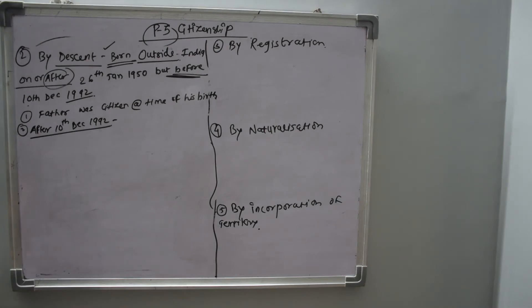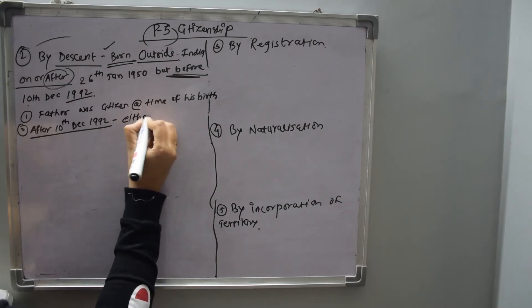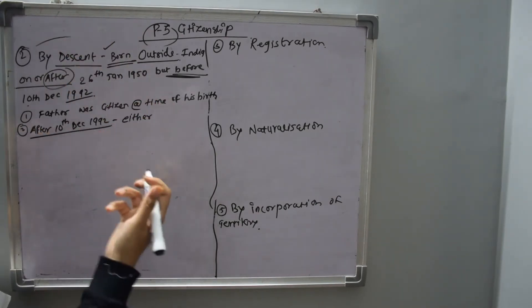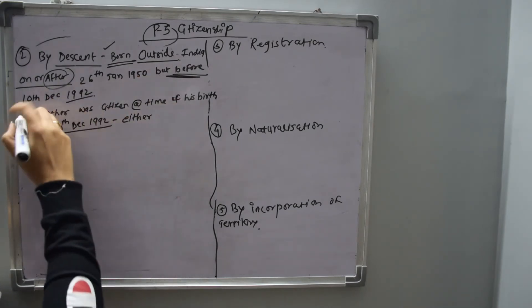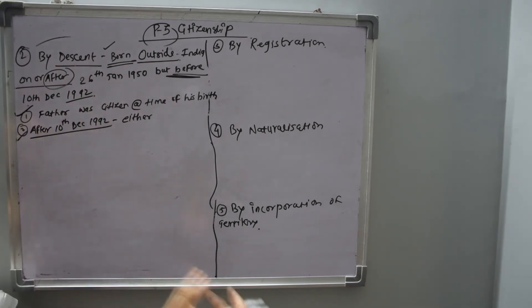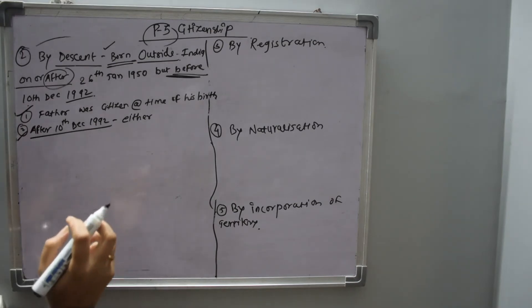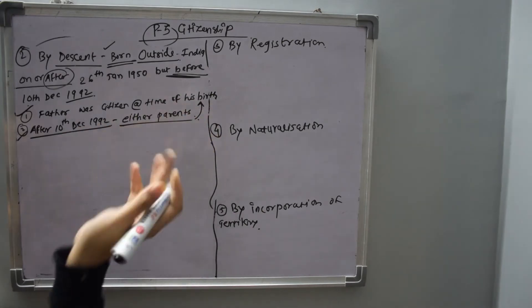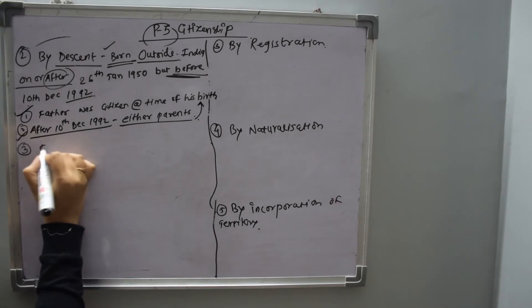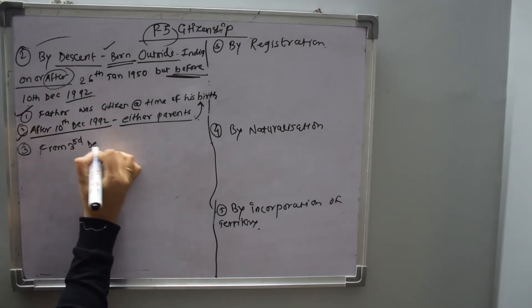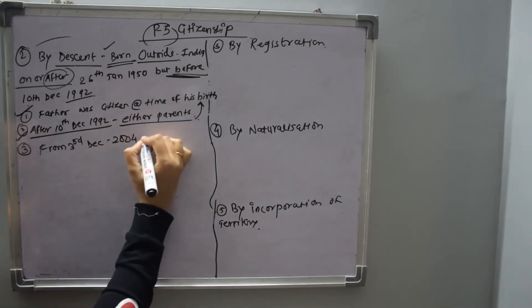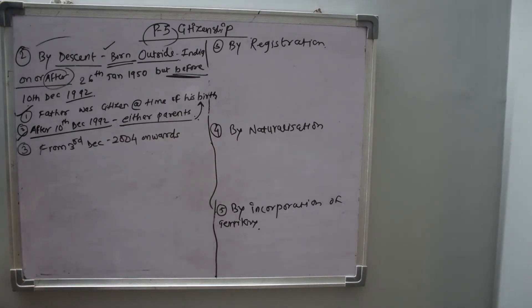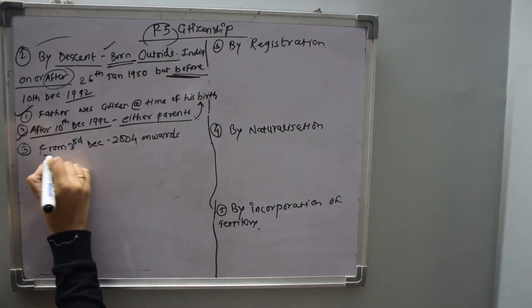Just look at the pattern in all the conditions — the first point is always the compulsion case where the father should be citizen; the second is either parent; and the third will be both. From 3rd December 2004 onwards, a person born outside India shall not be a citizen of India by descent unless his birth is registered at an Indian Consulate.